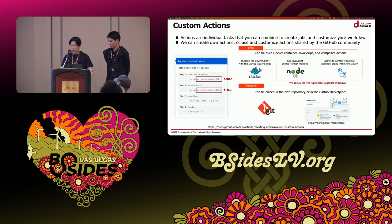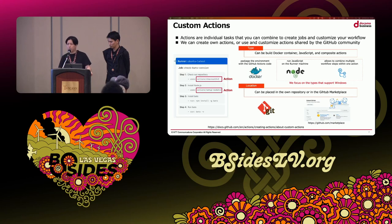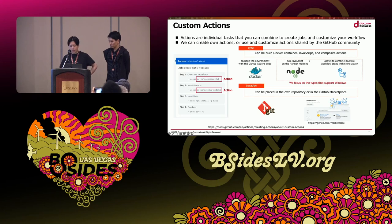Next, let's look at Custom Actions. Actions are individual tasks in the workflow. We can use a combination of actions to suit our purpose, and we can also create and publish our own actions. Custom Actions has a concept of type and location. Three types are available, but we have targeted JavaScript action and composite action that support Windows.